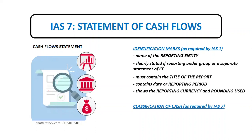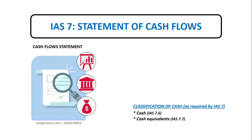Under IAS 7, the statement of cash flows is designed to provide information about the change in an entity's cash and cash equivalent transactions. It shows the movement between two items: cash and cash equivalents. These are two distinct classifications that we need to understand more deeply.